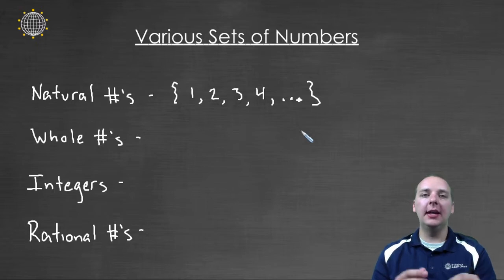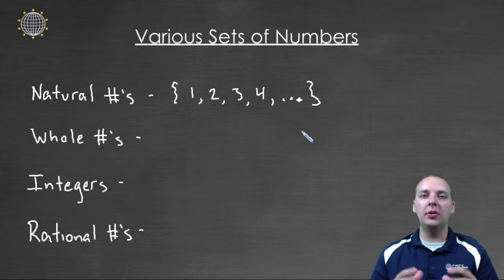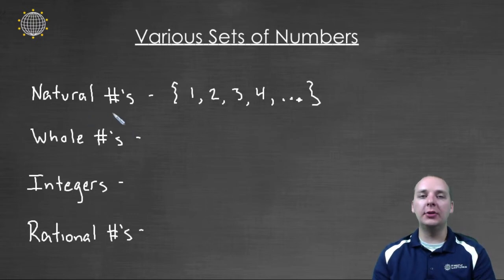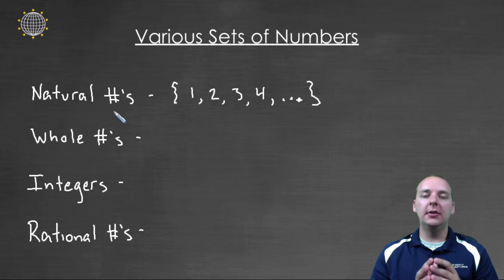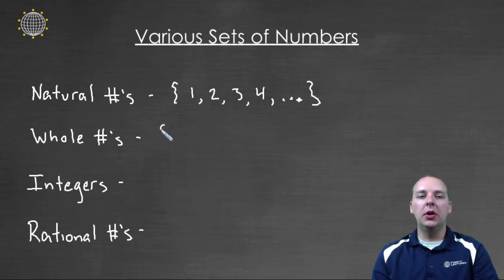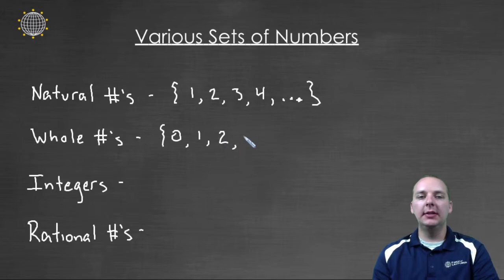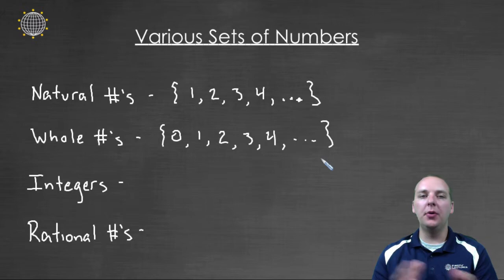Now there's another set that includes the natural numbers and is a little larger — it includes all the natural numbers and the number zero. Most people do not include zero in what we call the natural numbers, though some actually do. Most people consider the natural numbers going from one to infinity, where the whole numbers would include one through infinity but would also include zero — so zero through infinity would be called the whole numbers.